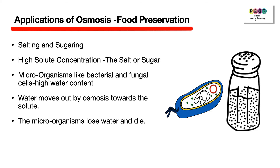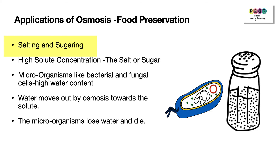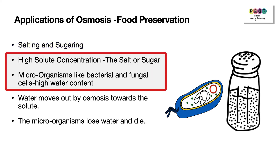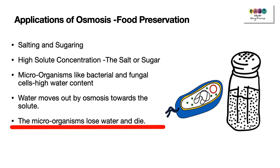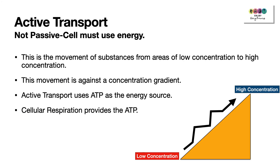An important application of osmosis is in food preservation — the practices of salting and sugaring. If you cover food in salt or add lots of sugar, as in jams, microorganisms like bacteria and fungi that cause food spoilage will lose water. Their cells contain a lot of water, which moves out by osmosis towards the salt or sugar — the solutes. This ensures they cannot survive and they die, which is the principle of salting and sugaring.